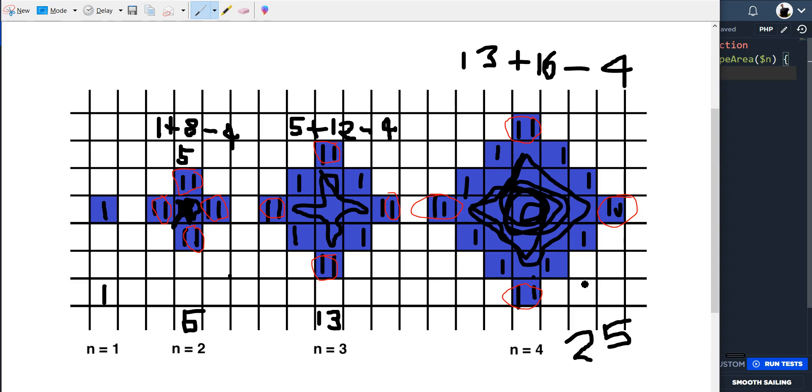And then if we just count them very quickly. So we've got our original one here which was 13. So 14, 15, 16, 17, 18, 19, 20, 21, 22, 23, 24, 25. 25 is our area. So now I've gone through the working out, we need to turn this working out into code, into a function.